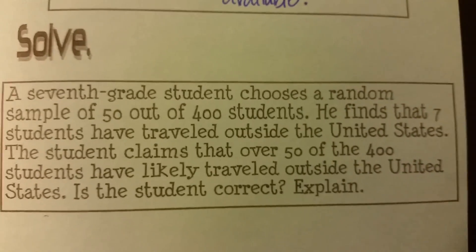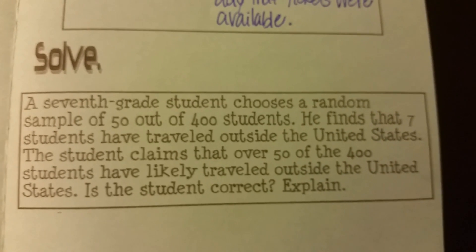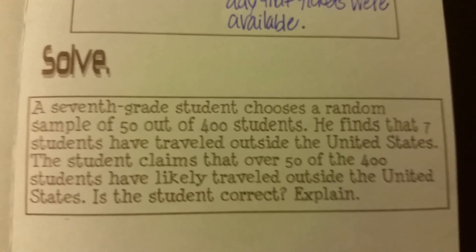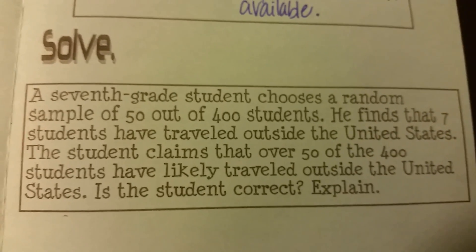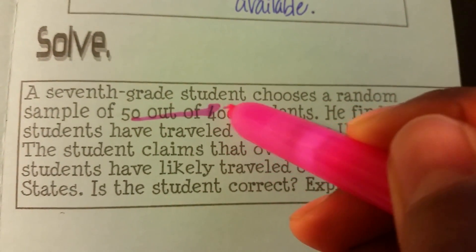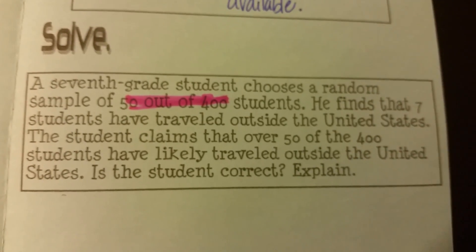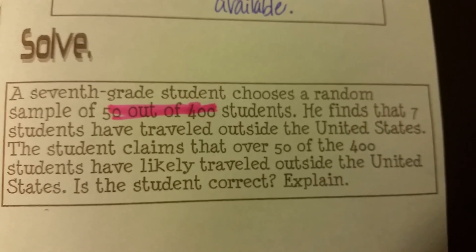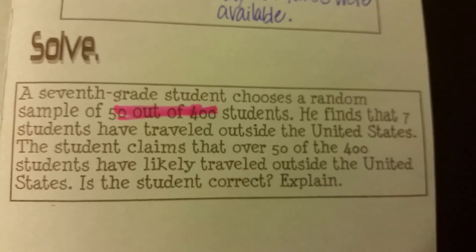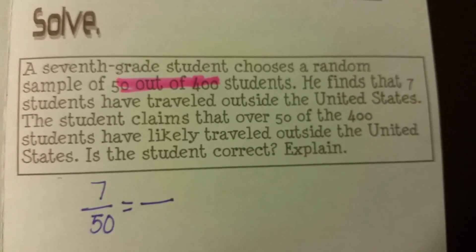Now we have another scenario. A 7th grade student chooses a random sample of 50 out of 400 students. He finds that 7 students have traveled outside the United States. The student claims that over 50 of those 400 students have likely traveled outside the United States. Is this student correct? We set up the proportion: 7 over 50 equals X over 400. I want you to talk with your partner and see how we solve this.